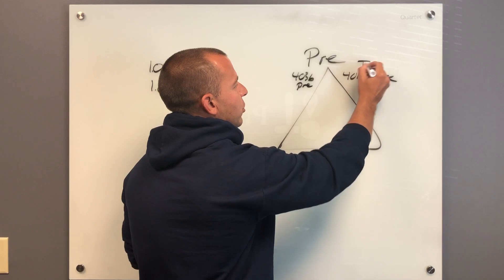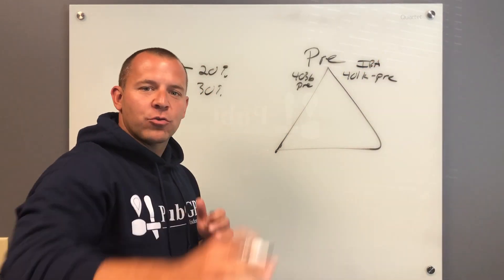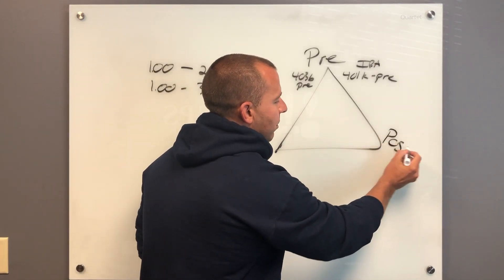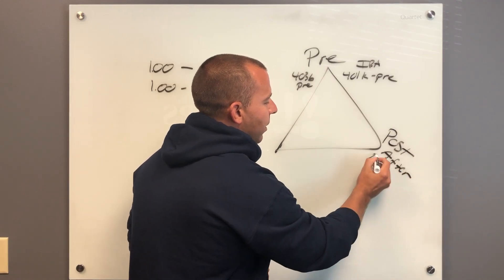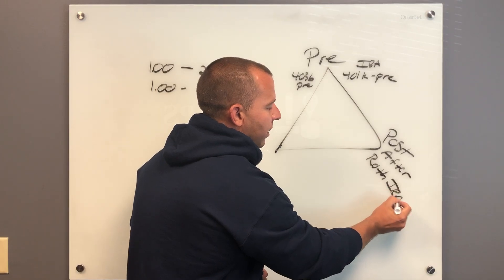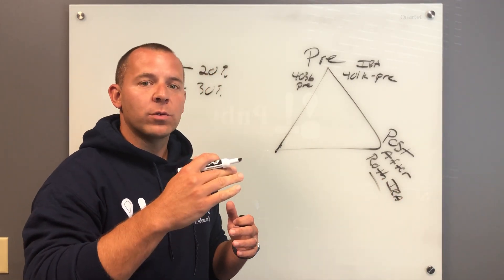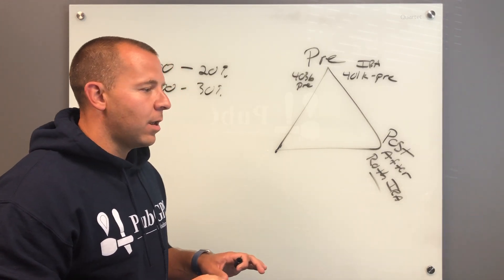The second part of your tax control triangle is to save after tax, post-tax. And this would be using things like a Roth IRA where the money can be invested after tax and, as long as the right rules are met, it can be withdrawn without paying any tax ever again.